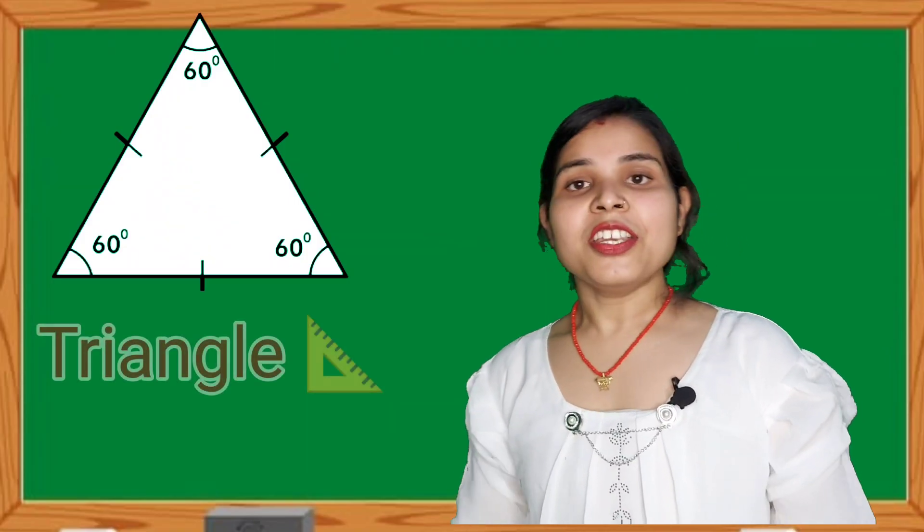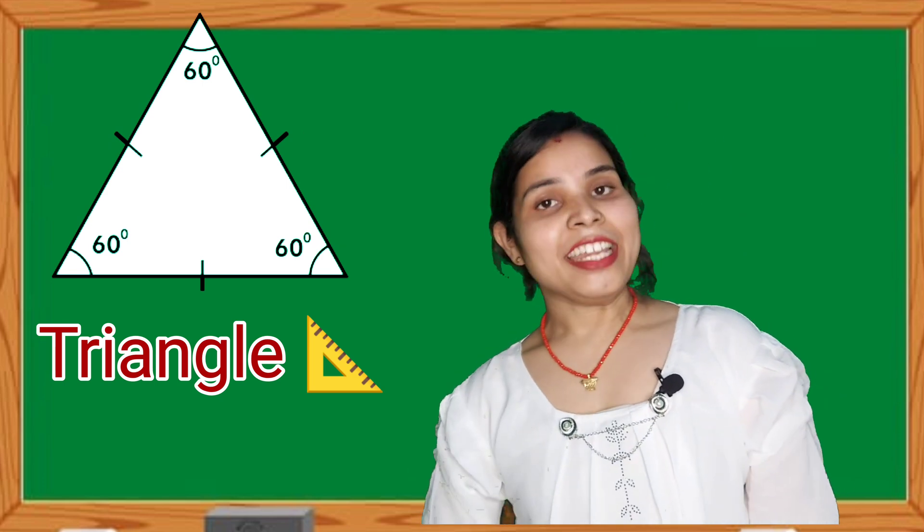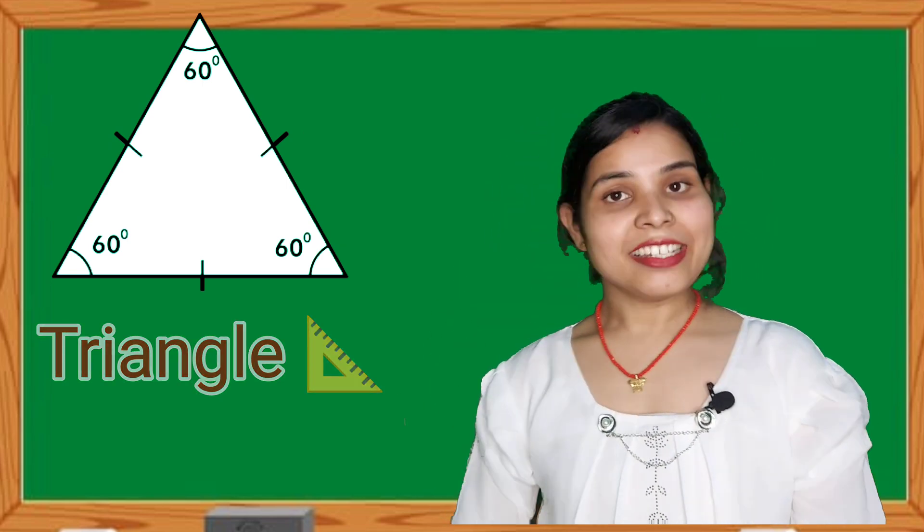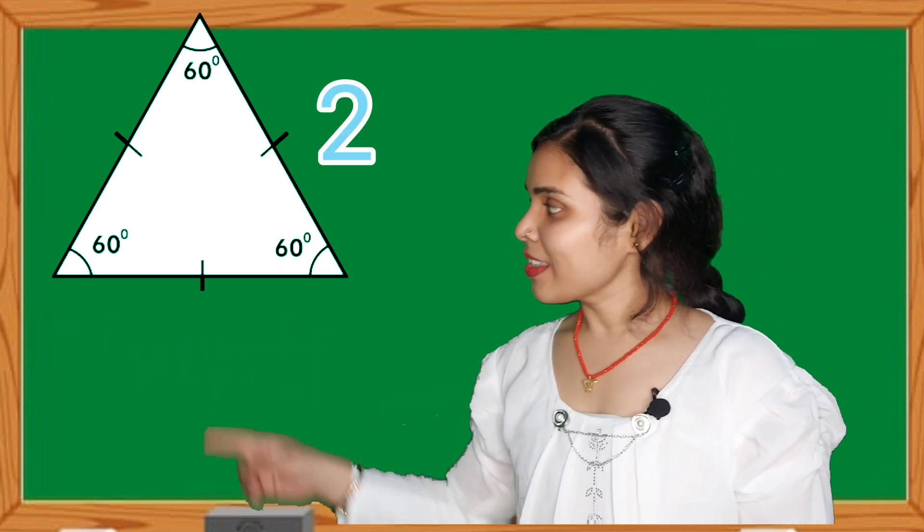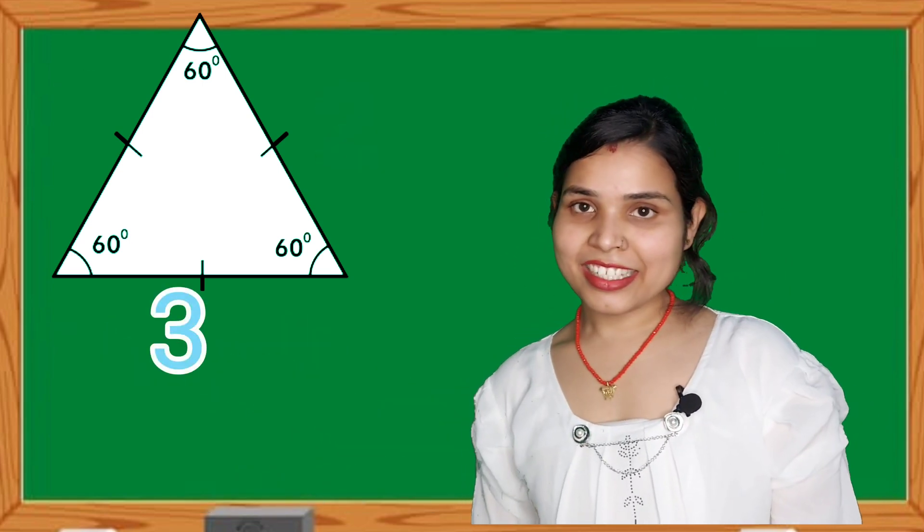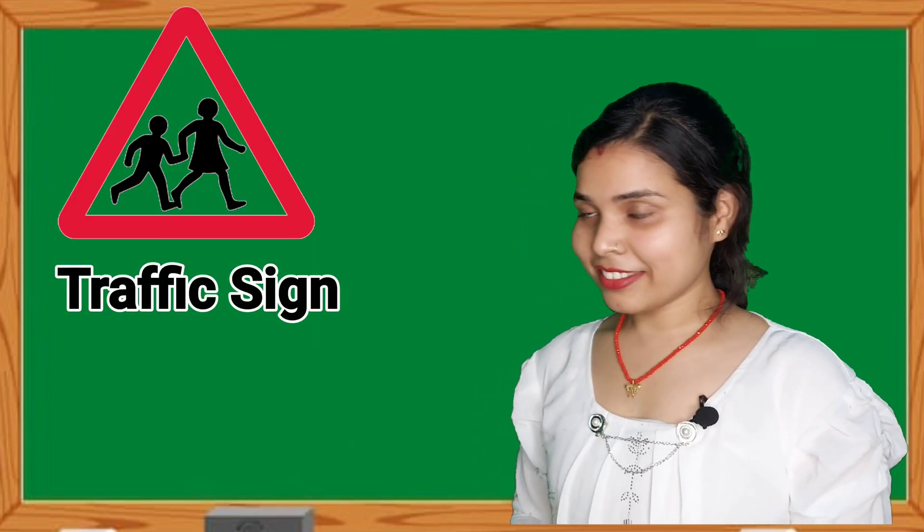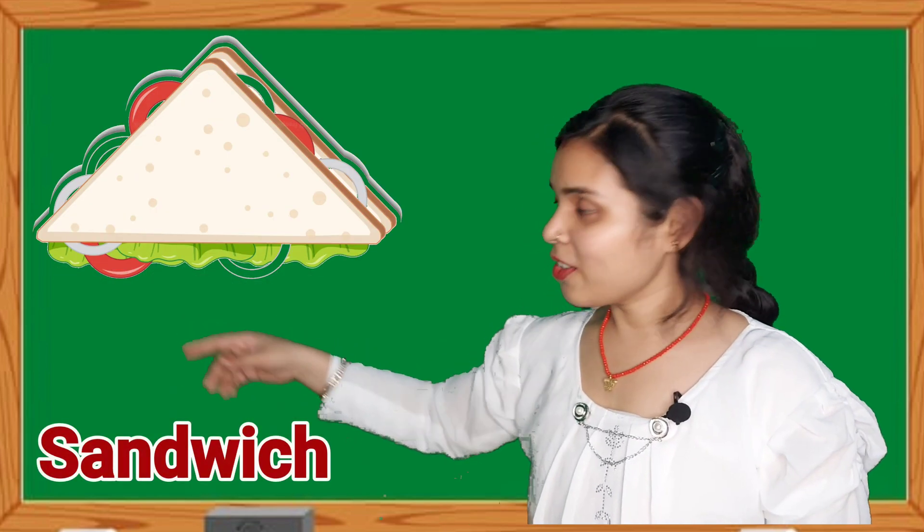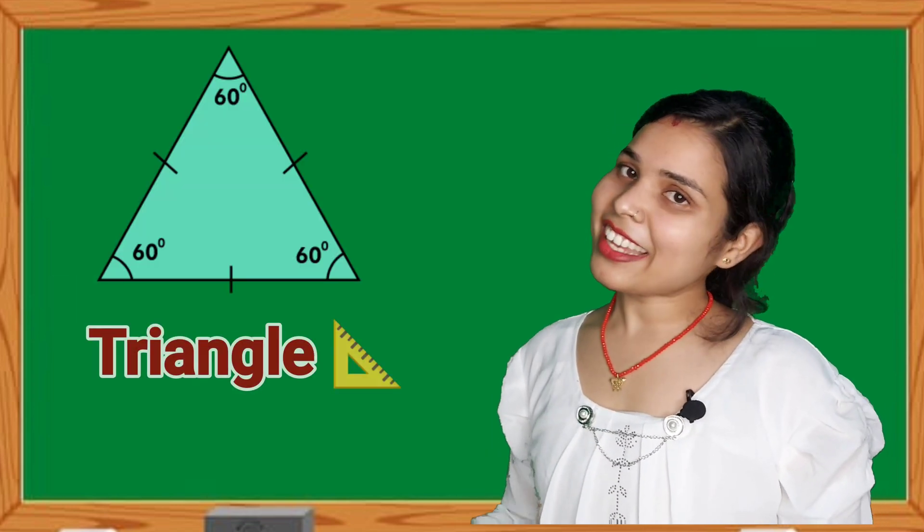Children, now next shape is triangle. A triangle has three sides. Let's count. One, two and three. Children, the shape of triangle like traffic sign, sandwich and yummy pizza slice. These are all example of triangle shape.